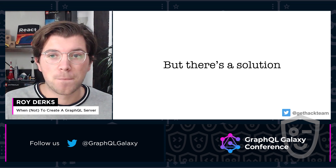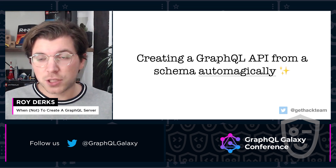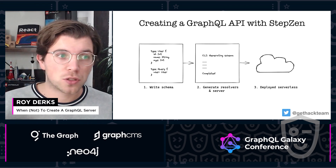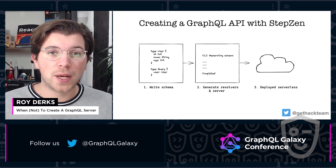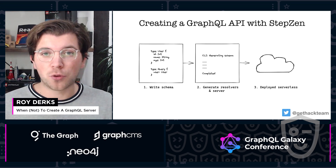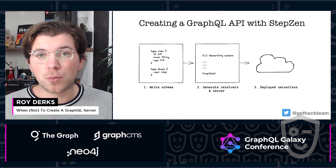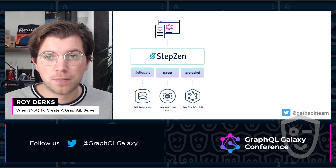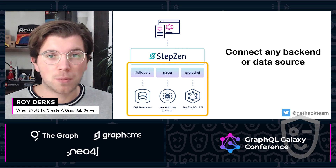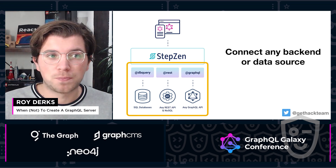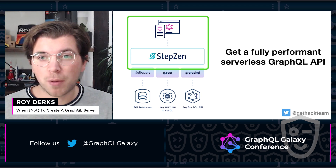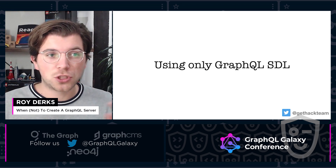Luckily there is a solution: you can create your GraphQL API automatically from a schema. This can be done with Stepzen, for example. Creating a GraphQL API with Stepzen is very straightforward — you just write your schema, define all the types, and those types get linked to the data sources they're coming from. This can be any backend, and Stepzen's CLI will then generate resolvers and the server automatically for you, deployed serverlessly in the cloud. You don't have to worry about any deployments, scalability, or performance of your resolvers — it's all handled for you.